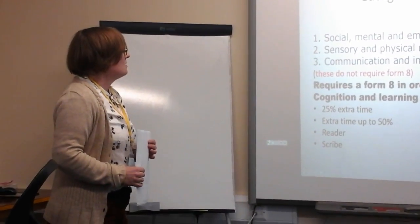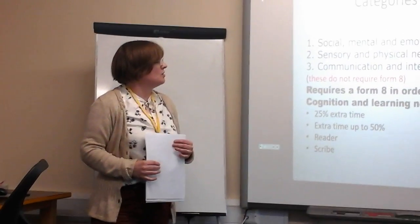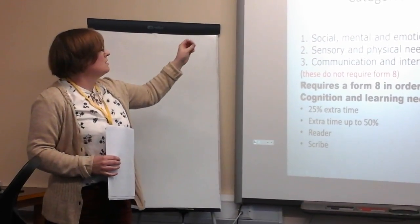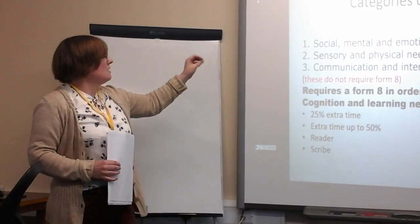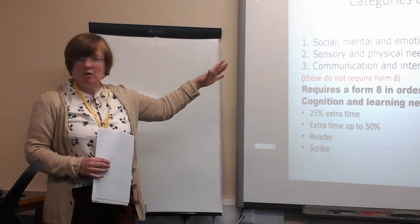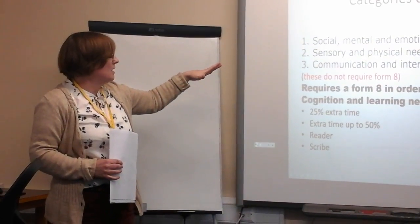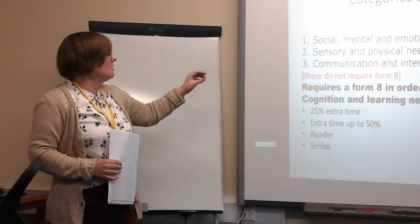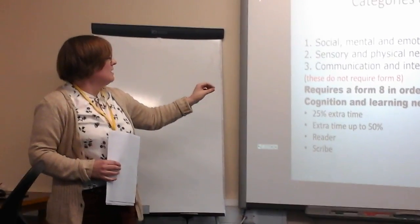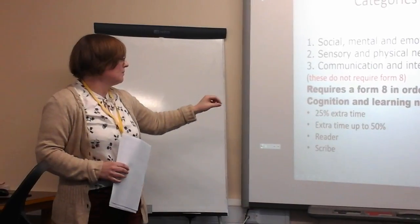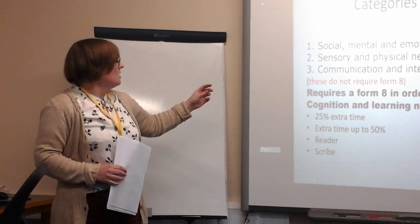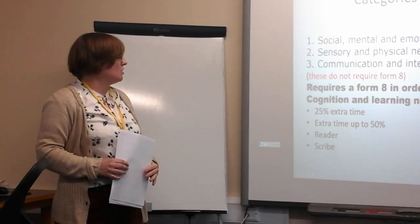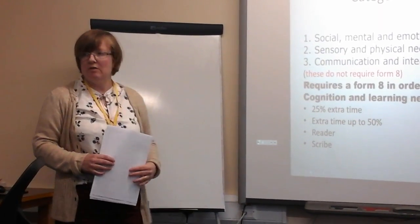The categories under which somebody may be able to get access arrangements would be: social, mental and emotional needs; sensory and physical needs; and communication interaction needs. Those do not require a Form 8, but other types of evidence. Those requiring a Form 8 are cognition and learning needs, which includes extra time at 25% and 50%, and a reader and a scribe, and evidence is required for that.